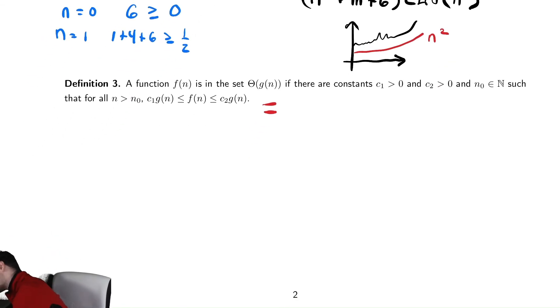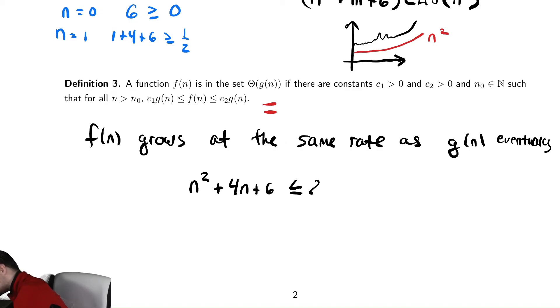Using the two things we did there, we're just saying f(n) grows at the same rate as g(n), and again, eventually. So, if we write down the two inequalities we had, n² + 4n + 6 is less than or equal to 2n² and greater than or equal to ½n². Then, in some sense, it looks like n², right? It's bounded below by something that looks like n² and bounded above by something that looks like n². It's sandwiched between them.